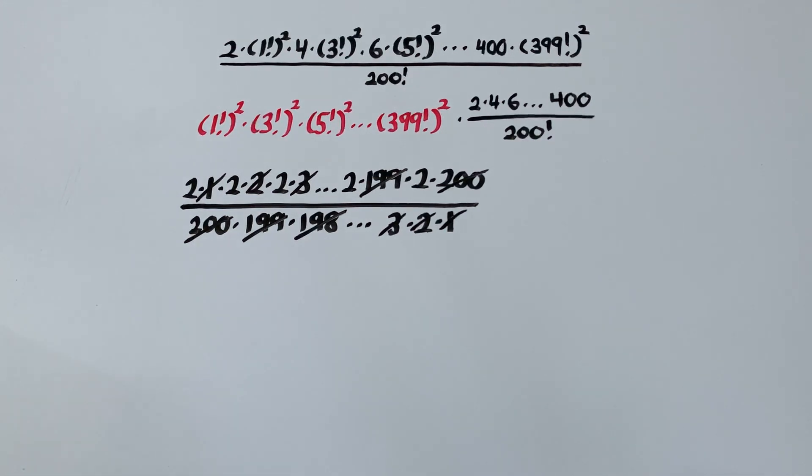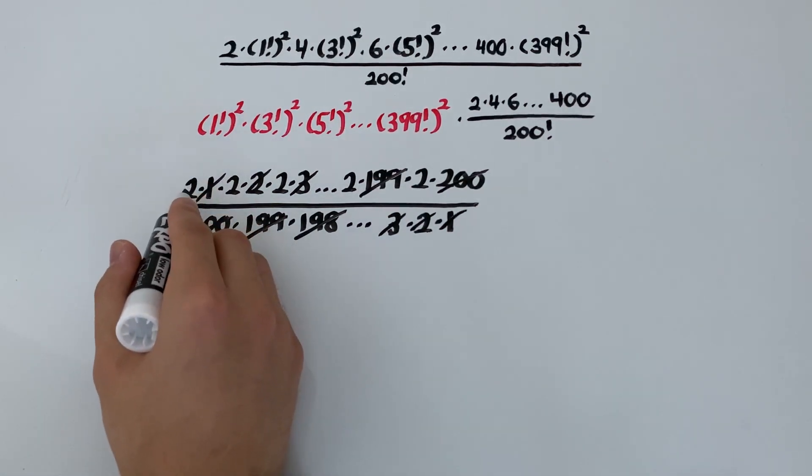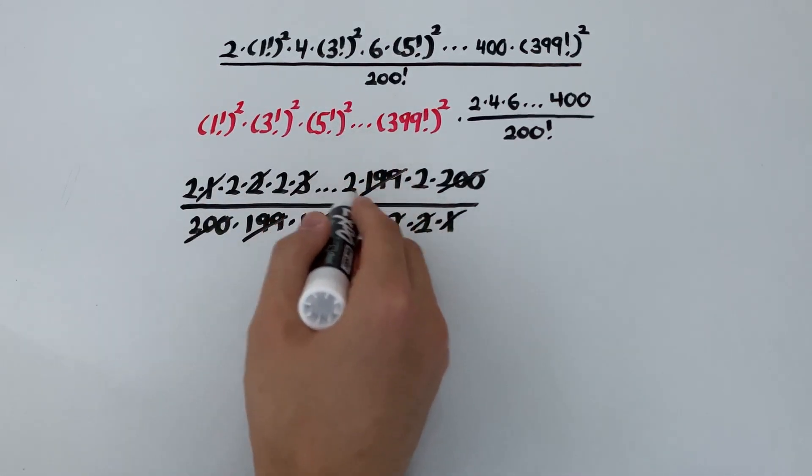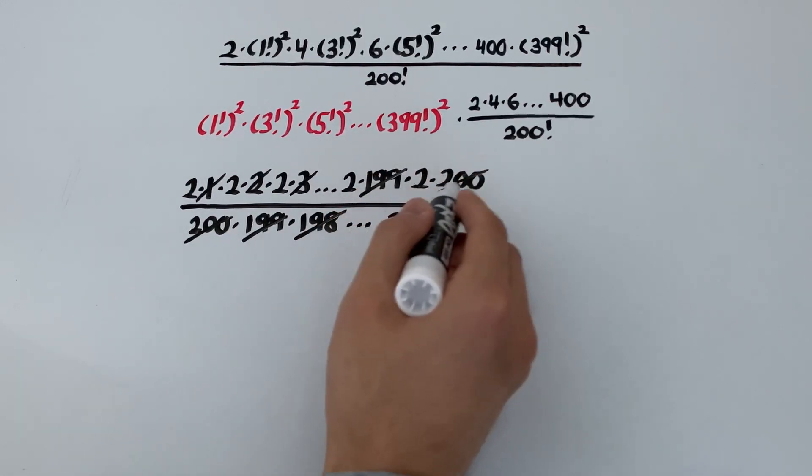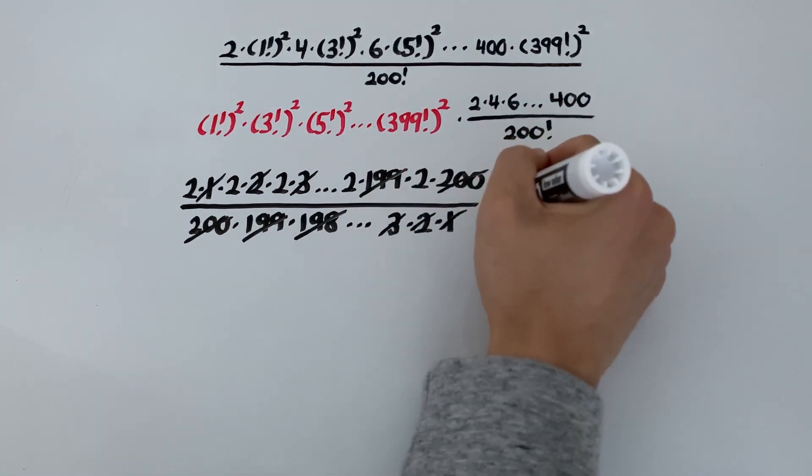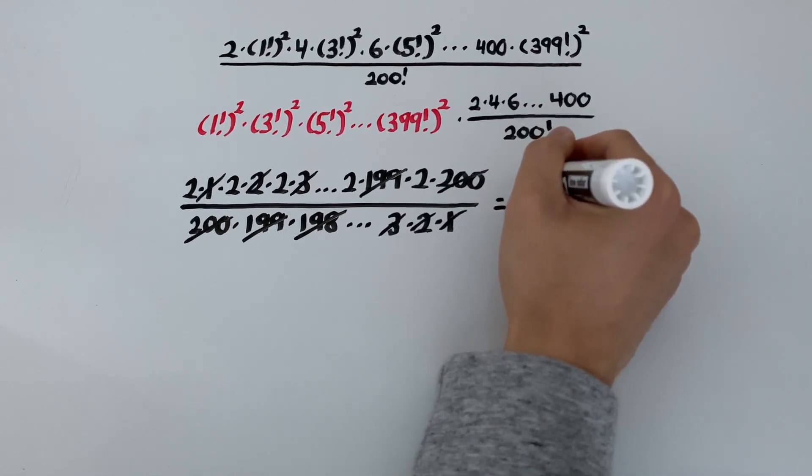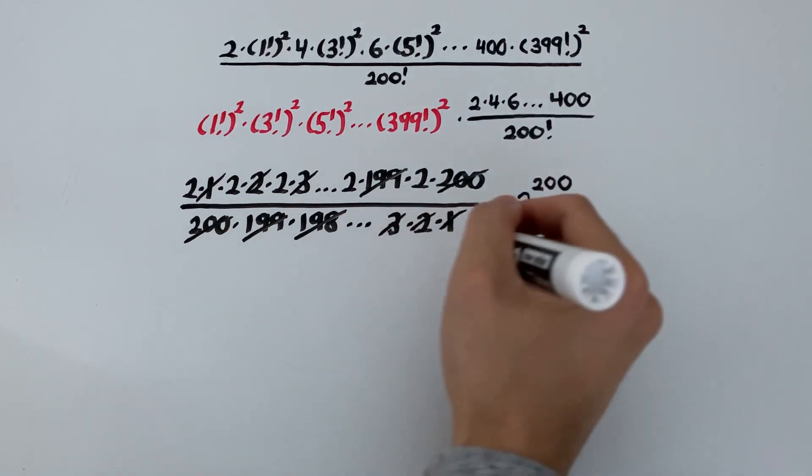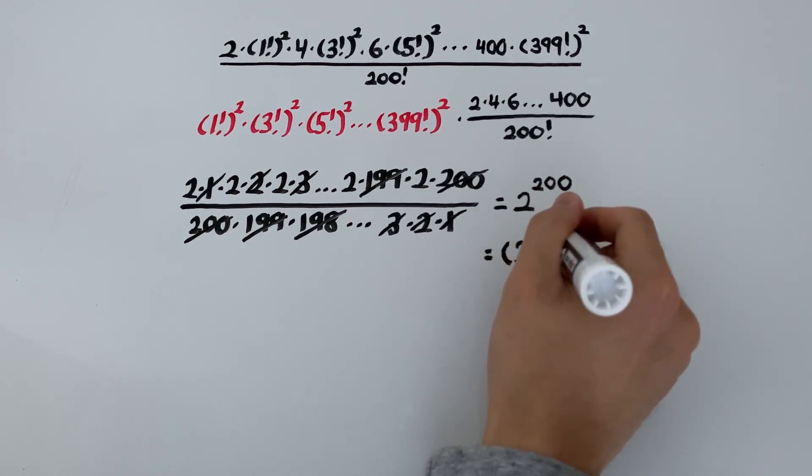So all we're left with is a bunch of 2s on the top. But how many 2s? Well, we can just count the pairings. So this is 1, 2, that's the second 2, that's the third 2, that's the 199th 2, and this is the 200th 2. So there are 200 2s. Which means that this is the same as 2 to the power of 200. And this is actually a perfect square as well. It's 2 to the 100 squared.